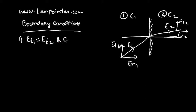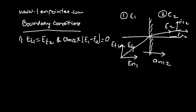In vector form, this is expressed as An12 cross (E1 minus E2) equals zero, where An12 is a unit vector perpendicular to the interface from region 1 to region 2. This is the first boundary condition: the tangential component of electric field intensity is continuous across the dielectric interface.